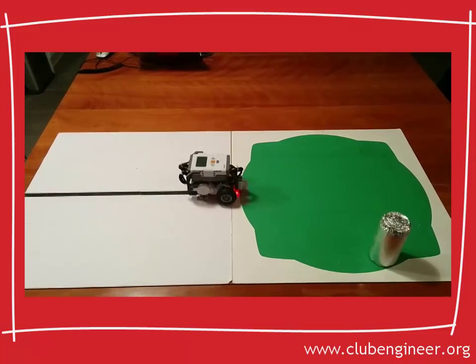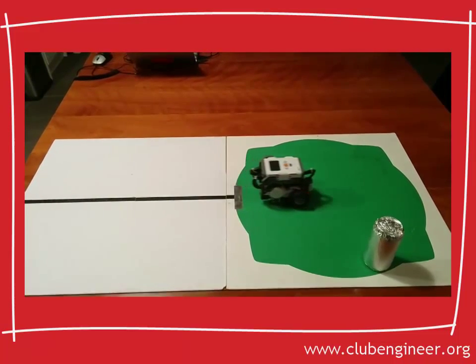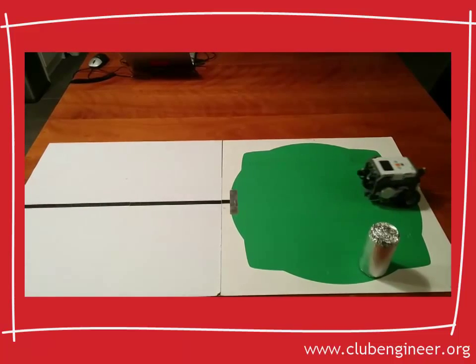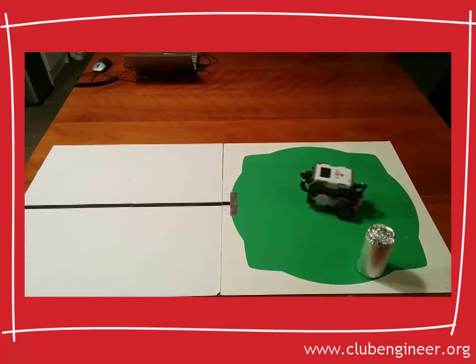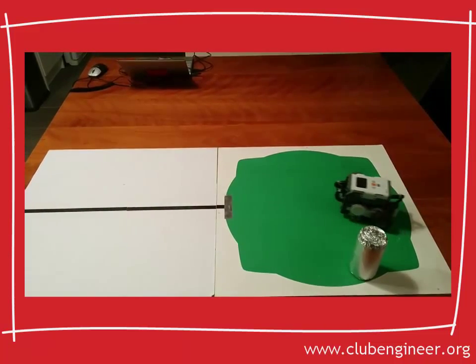Here the robot's following the line. It detects silver and exits the line following part of the program. It moves forward to the centre of the green tile, or the spill zone. It moves to the edge of the spill zone.